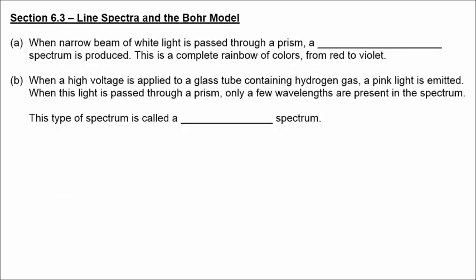Now moving on to Section 6.3, Line Spectra and the Bohr Model. When a narrow beam of white light is passed through a prism, a continuous spectrum is produced — a complete rainbow of colors from red to violet. When high voltage is applied to a glass tube containing hydrogen gas, a pink light is emitted, and when passed through a prism, only a few wavelengths are present. This type of spectrum is called a line spectrum.